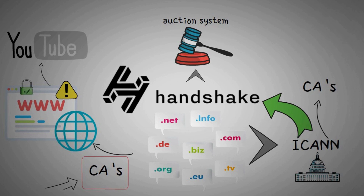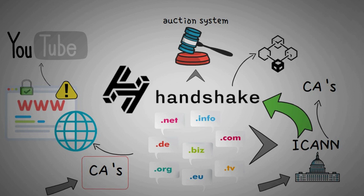However, a problem with the current system is that CAs, through error or manipulation, can make mistakes in identifying a genuine website. The CA system also depends on ICANN to maintain a list of domains, making it subject to errors from central management. But while using Handshake, the verification that tells users whether they can trust a website would move to the blockchain, potentially creating a new way to manage one of the web's oldest resources.